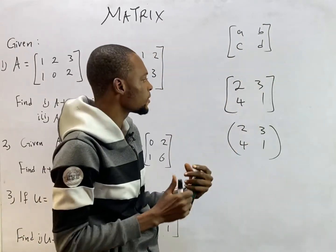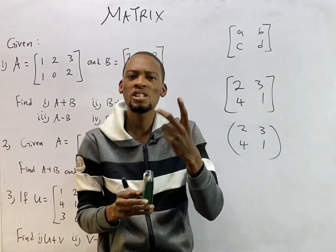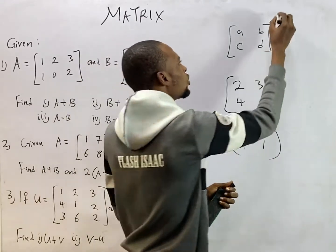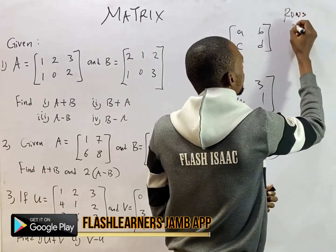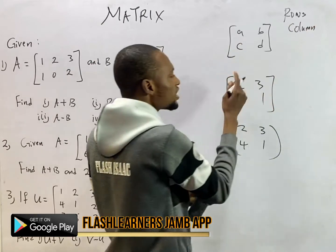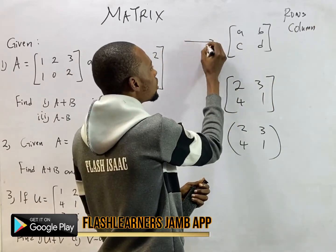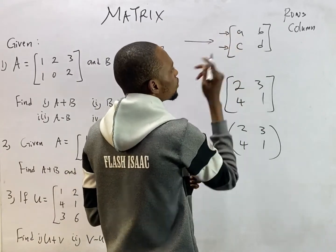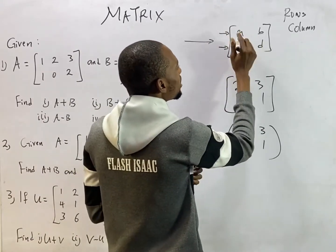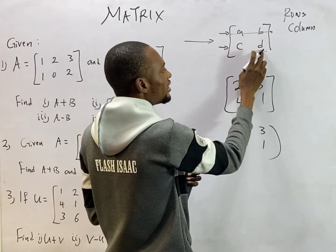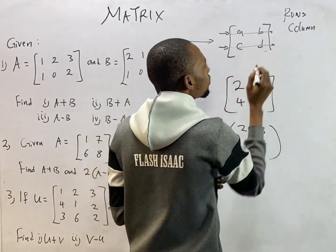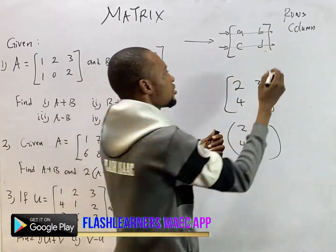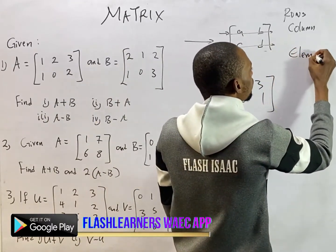Given these matrices, there's something else you need to know — every matrix has rows and columns. In this matrix, viewing from the side, these are the rows. This is row one and this is row two. So a and b are members of the first row, c and d are members of the second row. The things contained inside the matrix are called elements.